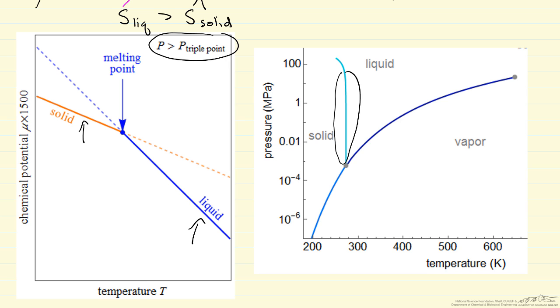If we're below the triple point, below the triple point pressure, then we would have solid-vapor equilibrium instead of solid-liquid equilibrium.